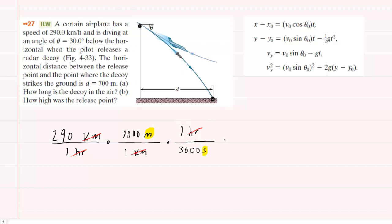So let's pick up our calculators and type in this conversion. And when you do so, you should get about 80.6 meters per second. So this would be the initial speed.